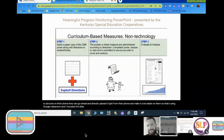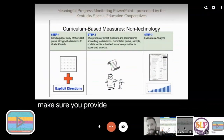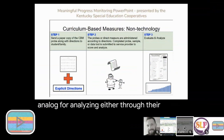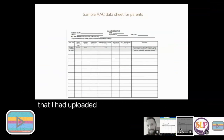That covers using Google Classroom. This slide from the Kentucky Special Education Cooperatives' presentation on meaningful progress monitoring highlights the steps we just talked about. You can send the paper copy of curriculum-based measures home or provide it through Google Classroom, and make sure you provide explicit instructions. The parent takes the data and submits it back to the teacher for analysis, either through their paper packet or through the Google Classroom platform.